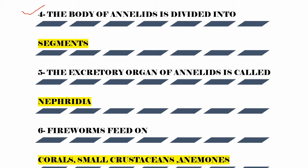The body of Annelida is divided into segments. These segments are separated from each other. So the body segments of Annelida are distinct and separated by partitions called septa.